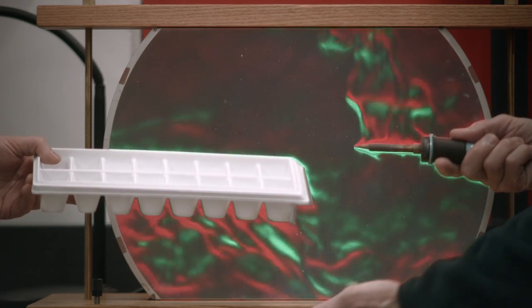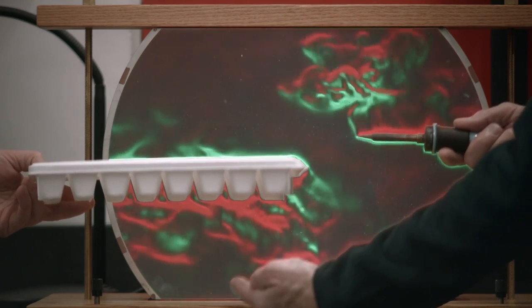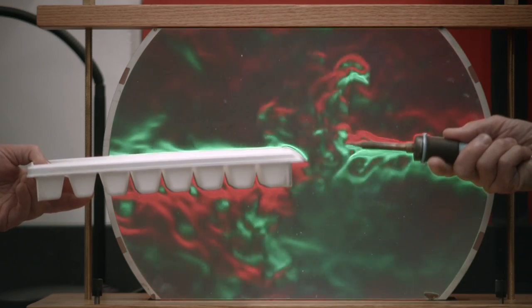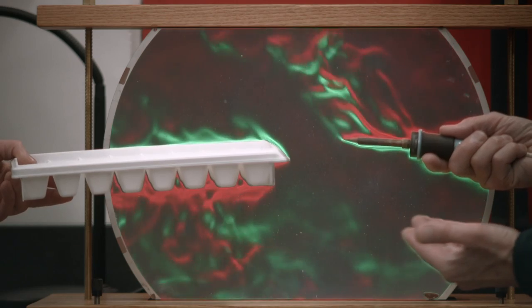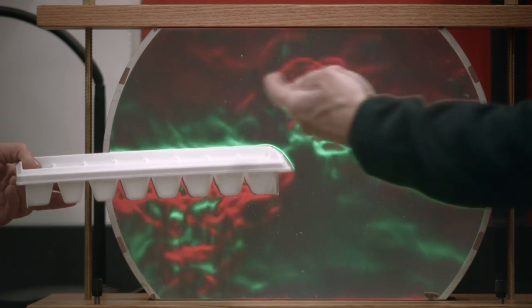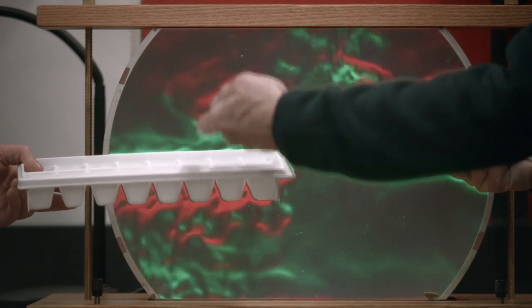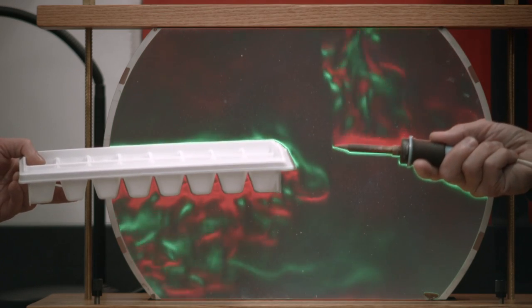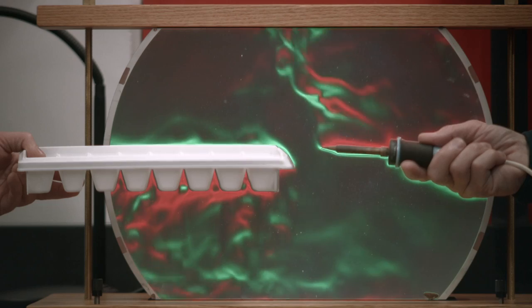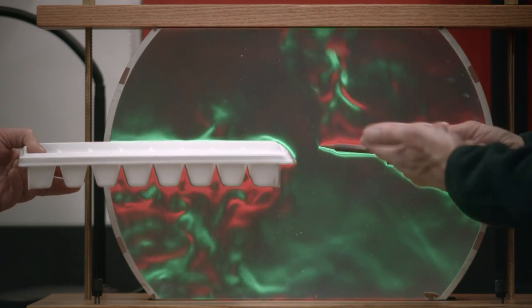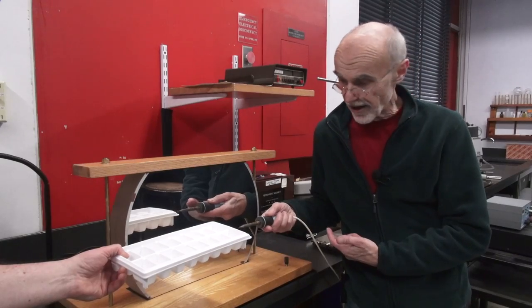You see, when we go from a less dense to a more dense region, then the light is refracted through the red filter. Whereas when we go from a more dense to a less dense region, it's refracted into the green filter. It's exactly the opposite of the hot object.